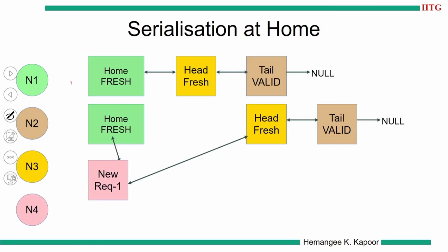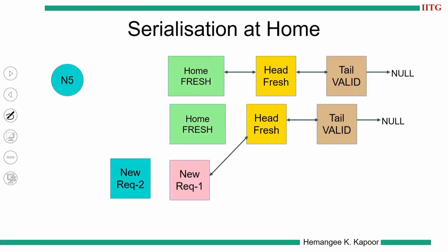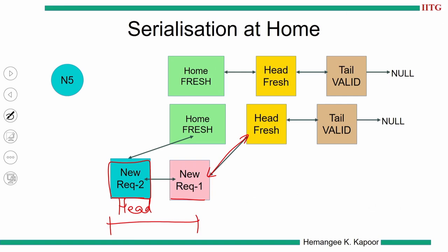Suppose we have an existing list and the pink node comes — the home makes the pink node the new head, and then the pink node connects with the yellow node. If a new request from a blue node comes while pink is still attaching, the home immediately makes blue the head and tells it to connect to the pink node. Pink node says it is still connecting to the previous node, but attaches blue, forming a pending list if required.